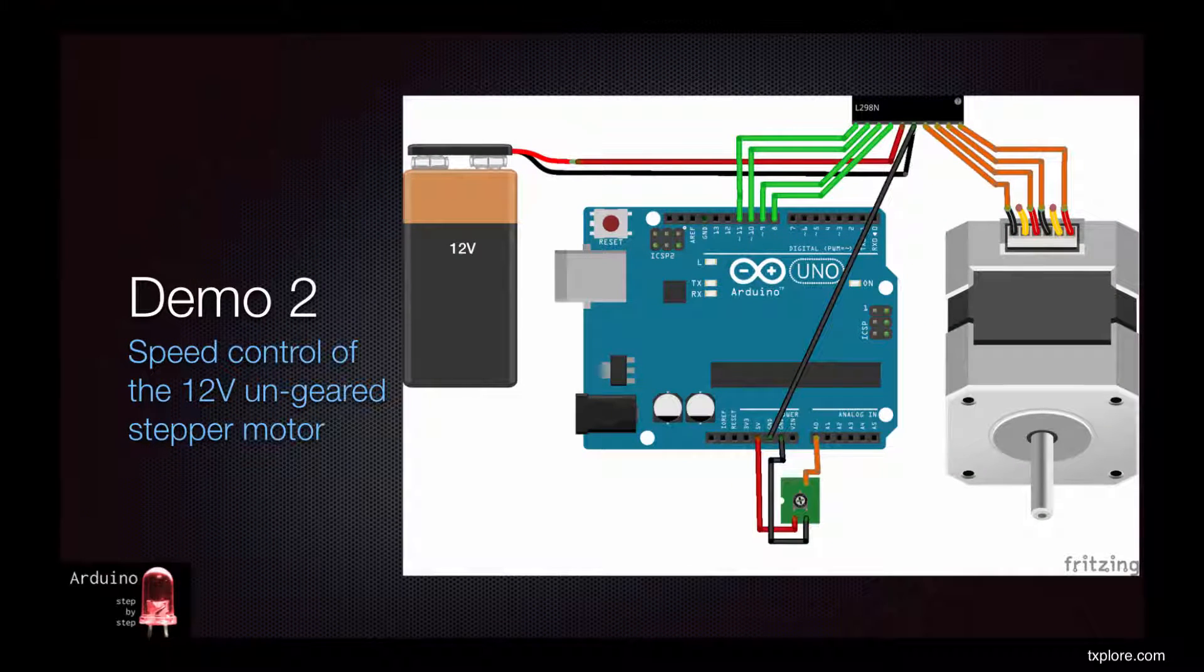In this demo we'll add a potentiometer and use it to control the step speed of the 12V ungeared stepper motor.